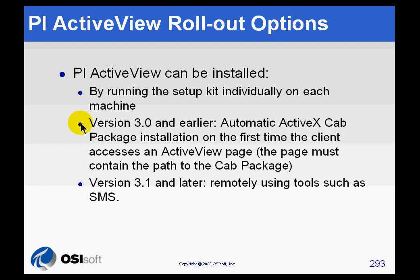We've actually got a better way of doing that now. We no longer support in the latest version, the 3.1 version, doing the cab file download. That was a huge download to try to automate, something that requires elevated privileges. We think the better approach is to support remote installs through a tool like Microsoft System Management Server, the SMS utilities. That's what we would suggest as far as the rollout for ActiveView.